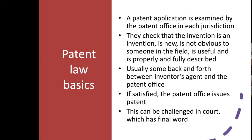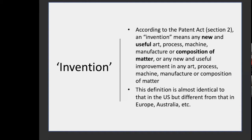So what is an invention? This is not a very useful definition: it's a new and useful art process, machine of manufacture, composition of matter, or an improvement. So basically, it's a way of doing something, or the thing itself, or any improvement. But what is an art? What is a machine? What is a composition of matter is not defined in the Patent Act. Courts have to try and figure out, looking back at history — going back to the steam engine — what this all means, and each court system might interpret those words differently.